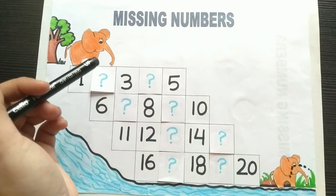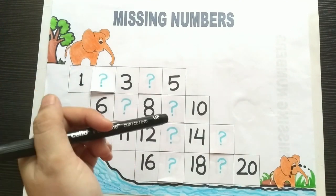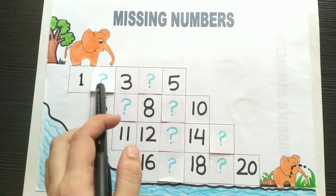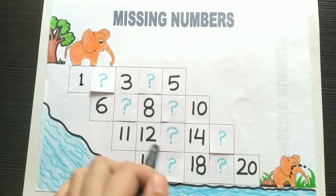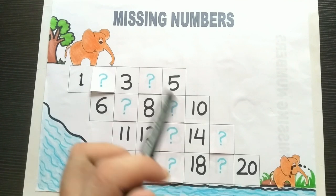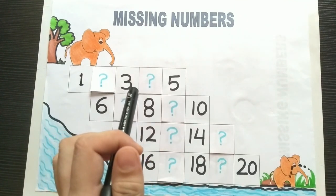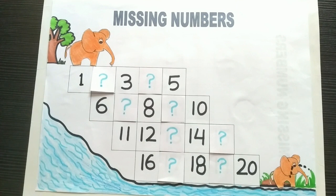So mama elephant heard her baby crying from the top of the jungle, but to cross the jungle the mama elephant needs to find the missing numbers. Do you see the question marks here? These are all missing numbers. Children, let's find the missing numbers and help mama elephant to find her baby elephant.